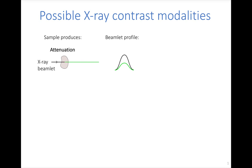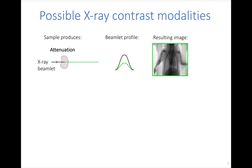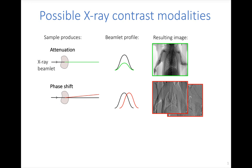If we capture this kind of image, we typically see the bones very well. But there are other modalities we can capture. If a sample incurs a phase shift on the wave field passing through it, the beamlet will move transversely — sideways — within the image plane. Capturing this phase information gives an image very sensitive to soft tissue structures, isolating the lungs, airways, and arms.